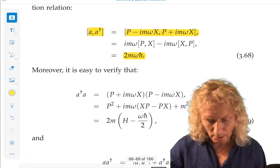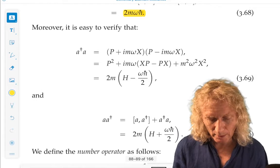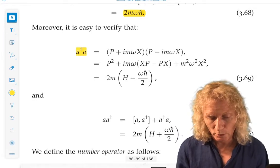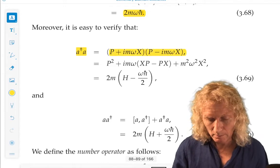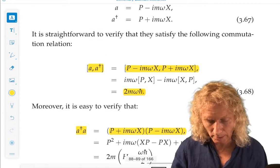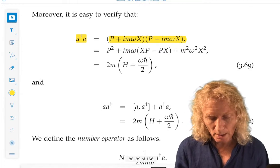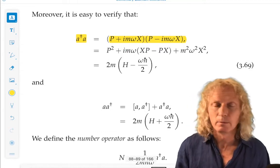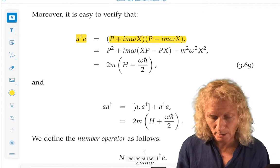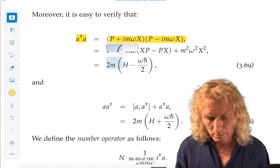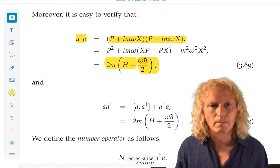So that's the commutator of a with a dagger. What about the product of a dagger a? That's going to be useful. Okay. You just work out the product. Okay. And you get 2m times the quantity of H, the harmonic oscillator Hamiltonian, minus omega h bar over 2.